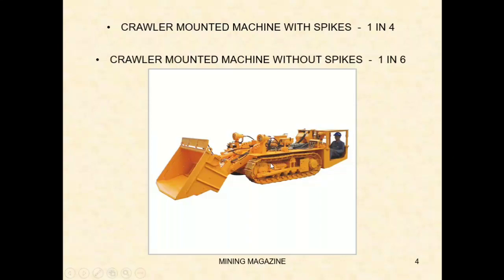For track-mounted machines: without spikes, only the frame is supported. With spikes, 1 in 4 gradient — the machine will be able to move. Without spikes, 1 in 6 gradient — the machine will be able to move.